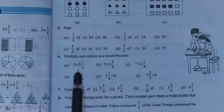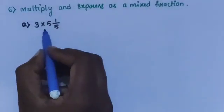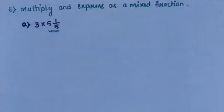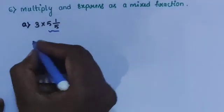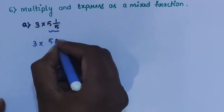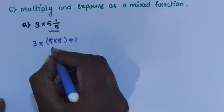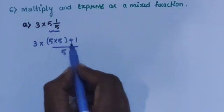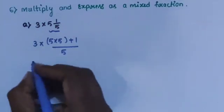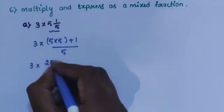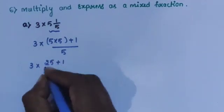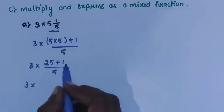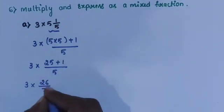3 into 5¹/₅. Here 5¹/₅ is a mixed fraction; convert it into an improper fraction. So 3 into (5×5 + 1) divided by 5. That is 3 into (25 + 1) divided by 5, which gives 3 into 26 divided by 5.